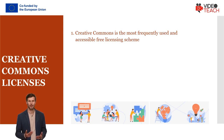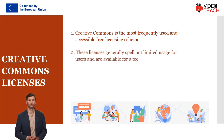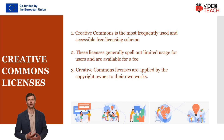Creative Commons is the most frequently used and accessible free licensing scheme, but there are others used by certain communities. Licenses can also be applied by commercial entities that own copyright to an item, such as a journal article. These licenses generally spell out limited usage for users and are available for a fee. Creative Commons licenses are applied by the copyright owner to their own works and are the most prominently used licenses of their type in the world.